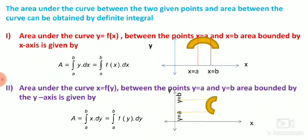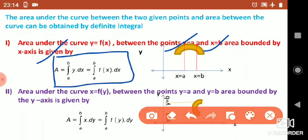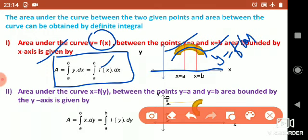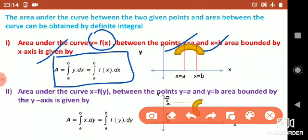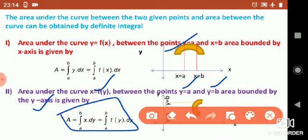The area under the curve y = f(x) between the points x = a and x = b, bounded by the x-axis, is given by the formula: A = ∫[a to b] y dx. The second formula: when the curve is bounded by the y-axis, the area is given by A = ∫[a to b] x dy, which equals ∫[a to b] f(y) dy.